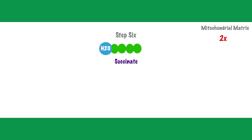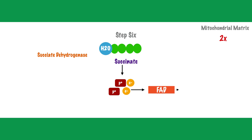In step six, the enzyme succinate dehydrogenase acts on succinate, resulting in the removal of two protons and two electrons. Both pairs of protons and electrons are transferred to a coenzyme called FAD (flavin adenine dinucleotide), which becomes FADH2 and plays a role in generating additional energy in the electron transport system. At the conclusion of this reaction, succinate becomes fumarate.